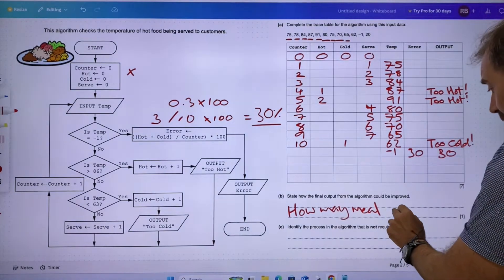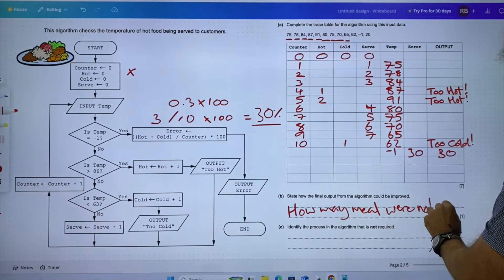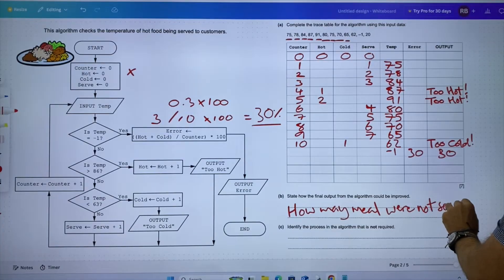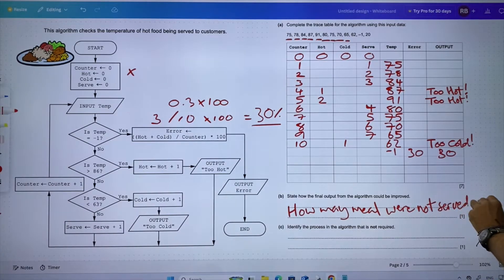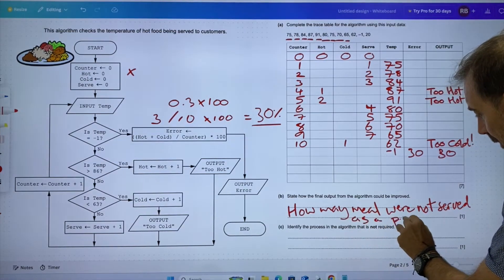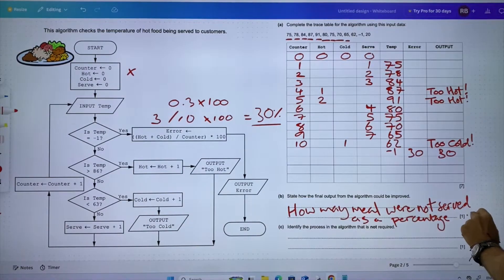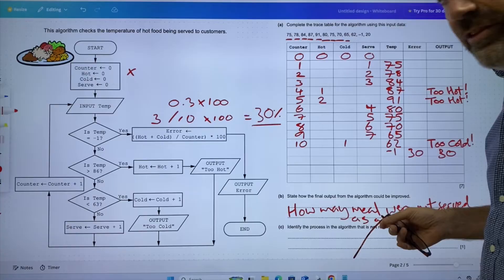In the case of this one, meals were not served as a percentage—30 percent. That's what I would do.